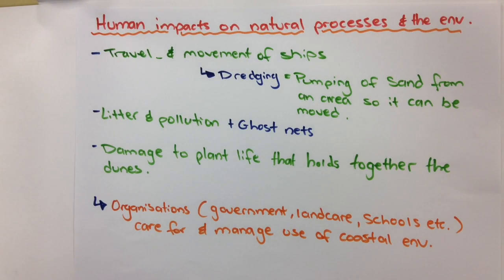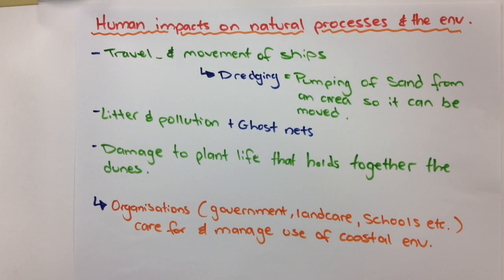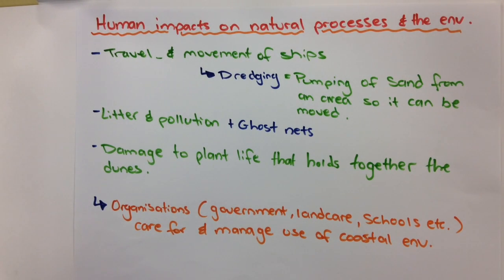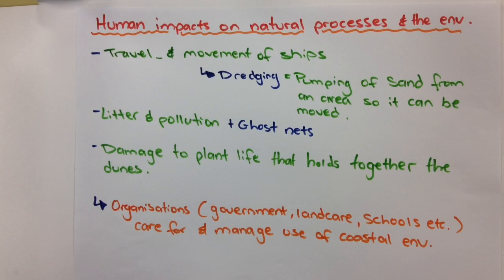Other human impacts include litter and pollution — people dropping their waste in sand dunes and riverways can have a real impact on the natural environment. What's called ghost nets — when a ship breaks their net off in the water — those nets can become tangled or drift around the ocean. The currents mean these nets travel along a current path and can be particularly dangerous and impactful on the natural environment.